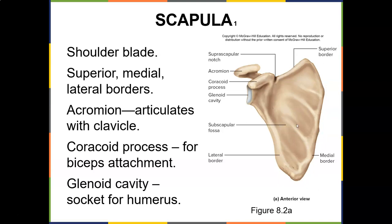Here's the subscapular fossa. Here's the lateral border, near your axillary region — your armpit. Here's the glenoid cavity, the coracoid process, and the acromion. You need to know all these parts: superior, medial, and lateral borders. The acromion articulates — meaning joins — with the clavicle via ligaments. The coracoid process is for biceps attachment. And the glenoid cavity is the socket for the humerus.